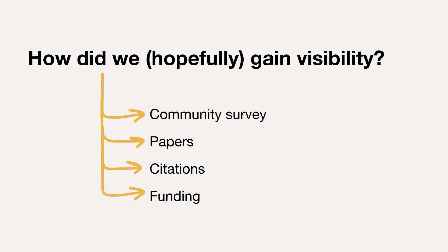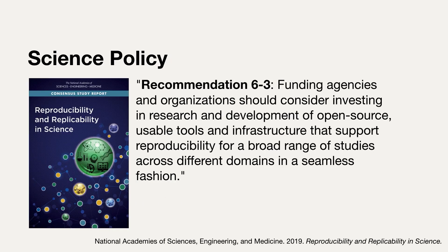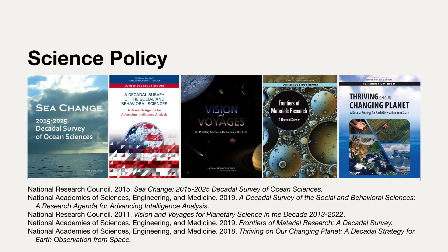Making progress in all of these four areas can help a project gain visibility, but also ultimately redefine science policy. There are already some examples of policy recommendations that support open source scientific software, such as this excellent report on reproducibility and replicability in science from the U.S. National Academy of Science. We're really happy to see support for open source scientific software in the solar and space physics mid-decadal survey, which came out in February of this year.